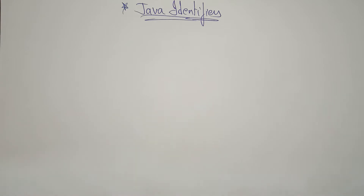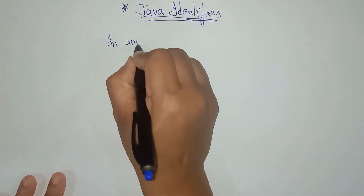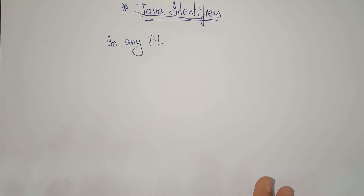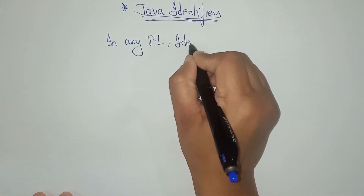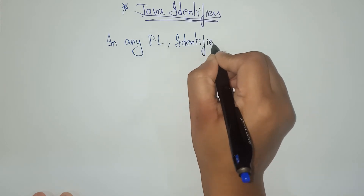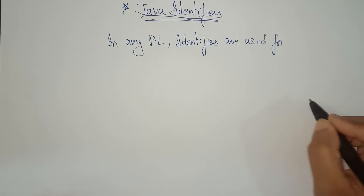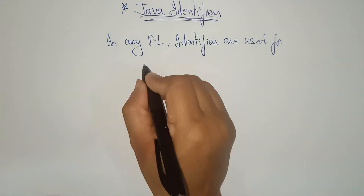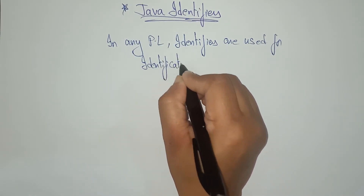If you consider any programming language — C, C++, Java, Python — whatever the programming language, identifiers are used for identification purpose.